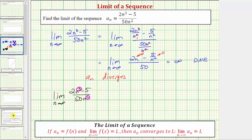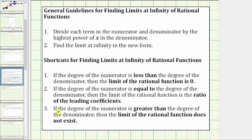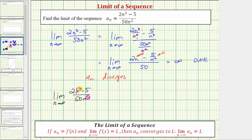Looking at the shortcut method, our limit is case three, where the degree of the numerator is greater than the degree of the denominator. When this is the case, the limit of the rational function does not exist. If the degree of the numerator is less than the degree of the denominator, the limit is zero. If the degrees are equal, the limit equals the ratio of the leading coefficients. In our case, because the degree of the numerator is greater than the degree of the denominator, the numerator is increasing faster than the denominator, so the limit does not exist and a sub n diverges.